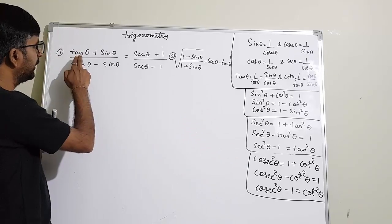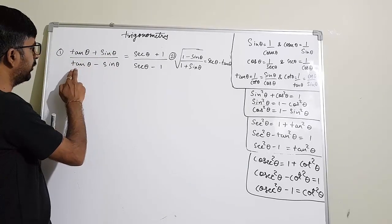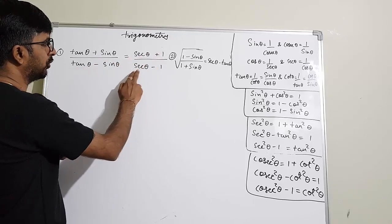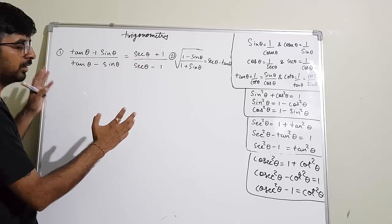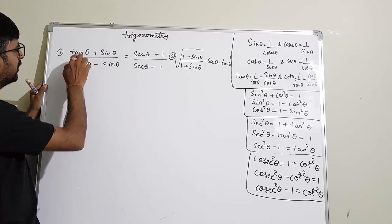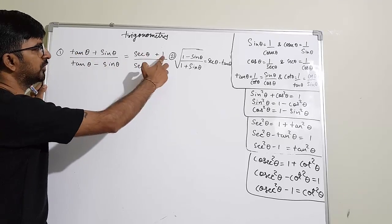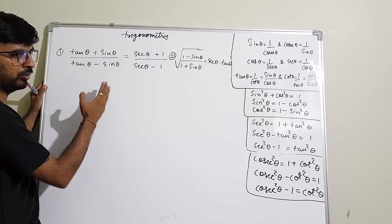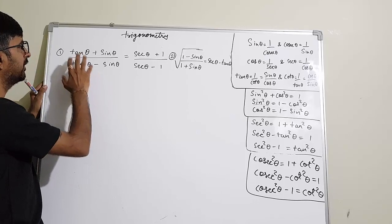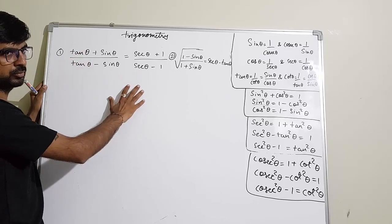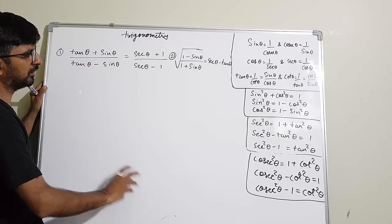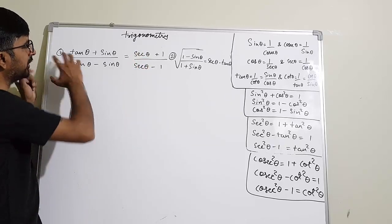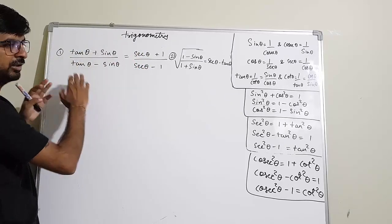Let us start question number 1: tan θ plus sin θ upon tan θ minus sin θ equals to sec θ plus 1 upon sec θ minus 1. Whenever this type of question arises with tan θ and sin θ, you need to convert something into other terms. Try to convert everything into sin and cos, and at last convert into whatever value you want.